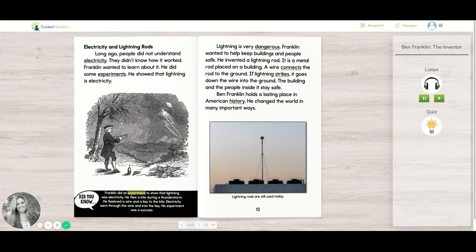Franklin did an experiment to show that lightning was electricity. He flew a kite during a thunderstorm. He fastened a wire and a key to the kite. Electricity went through the wire and into the key. His experiment was a success.